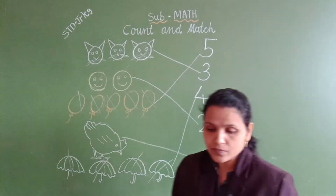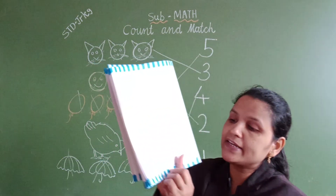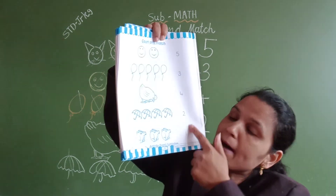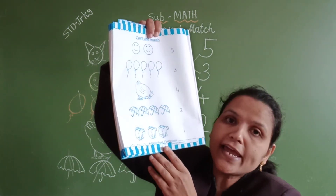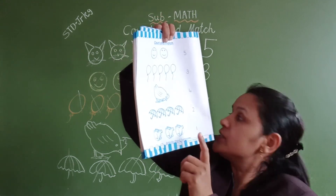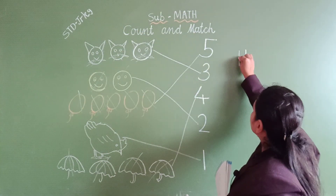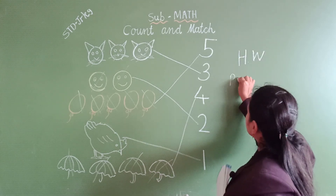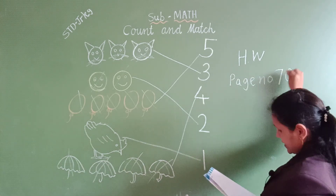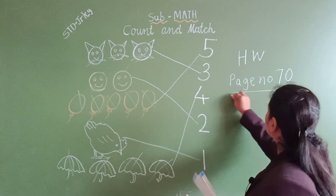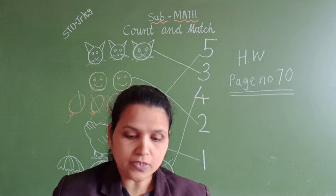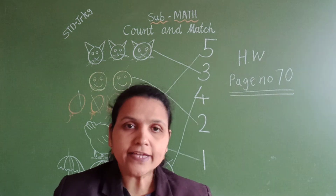So, in your book, page number seventy, you have to count these objects and match them with the correct number. This is your homework — page number seventy. Okay students, do you understand? Thank you, bye-bye!